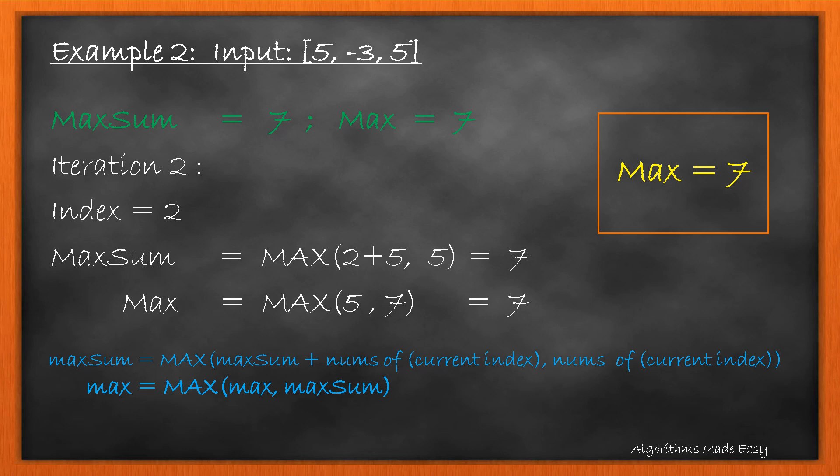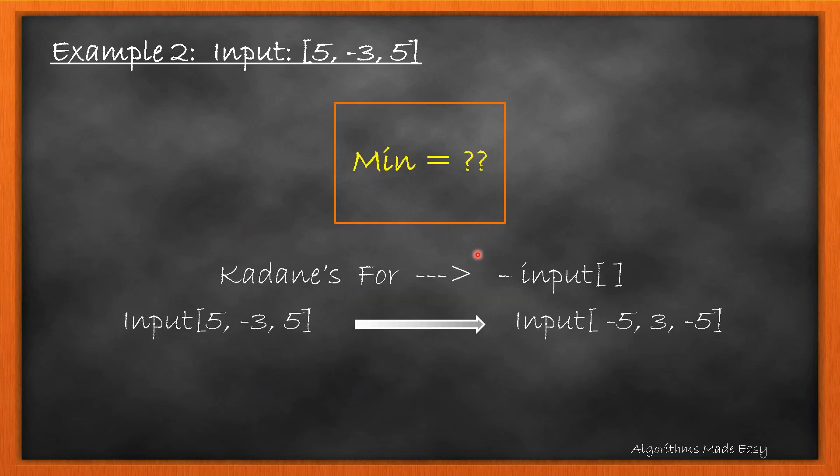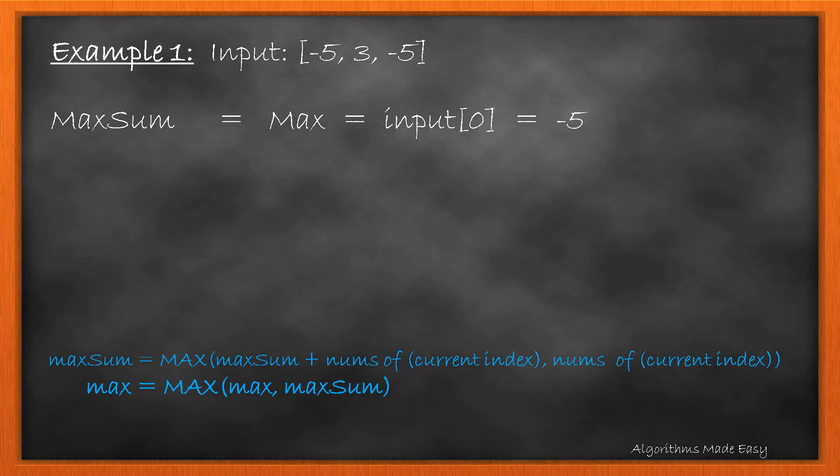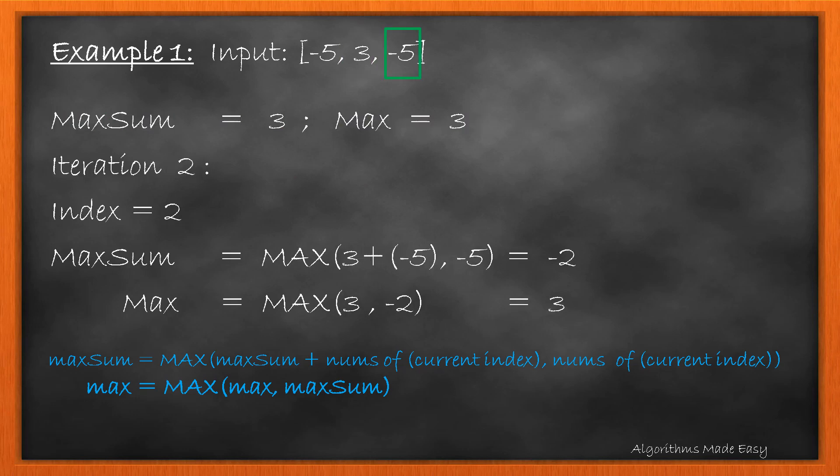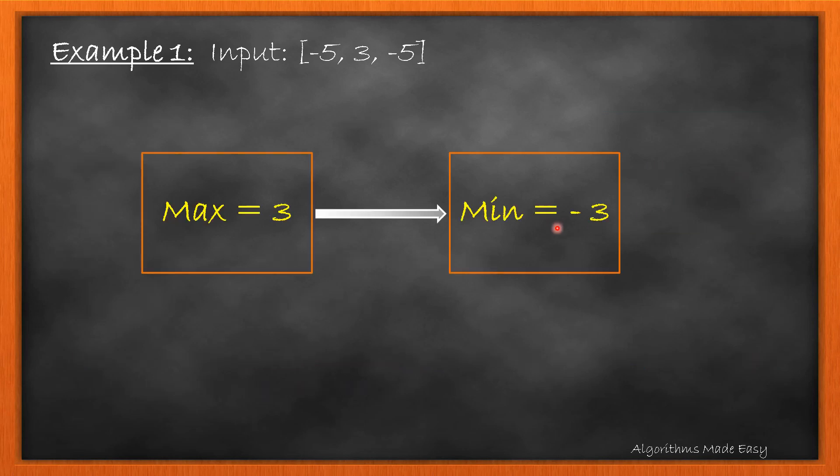Now, we need to find the min sum. So, we flip the signs of the array and find the max again using the Kadane's algorithm. We get 3 as our max.